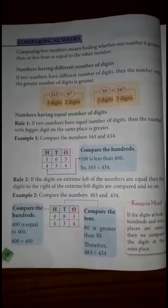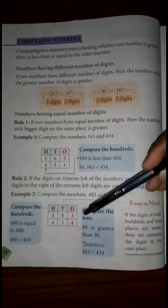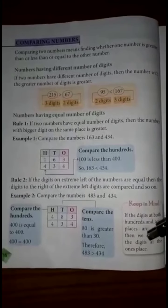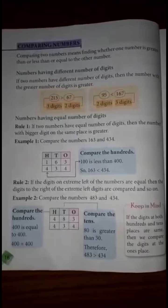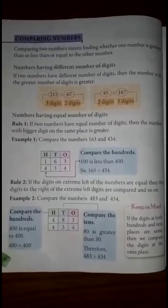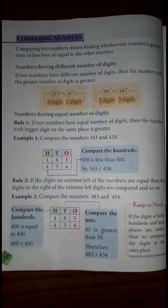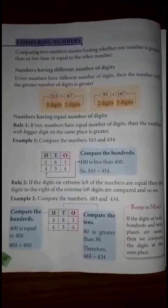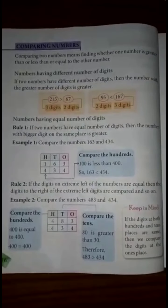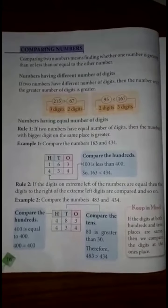We then compare the tens place. In 483, the tens digit is 8, and in 434, the tens digit is 3. So 80 is greater than 30. Therefore, 483 is greater than 434. If both the hundreds and tens places were the same, we would then compare the ones place.